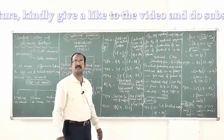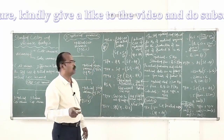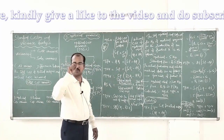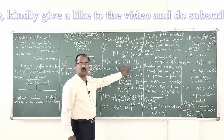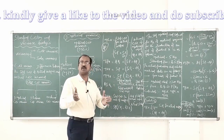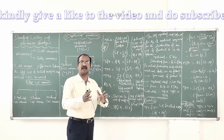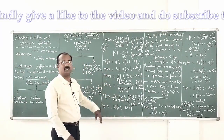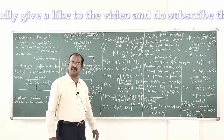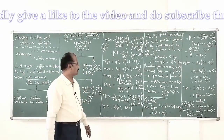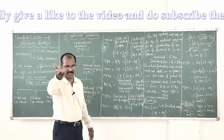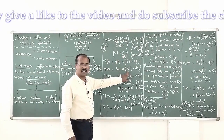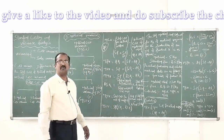Material price variance equals actual quantity into the difference between standard price per kg (or per litre) of raw material minus actual price per kg. Material usage (quantity) variance equals standard price into standard quantity for actual output minus actual quantity. Note that the same standard quantity calculated for MCV is applied here as well.